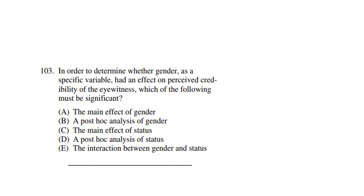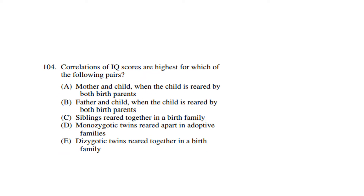Question 103: In order to determine whether gender as a specific variable had an effect on perceived credibility of the eyewitness, which of the following must be significant? The answer is the interaction between gender and status. Question 104: Correlation of IQ scores are highest for which of the following pairs?